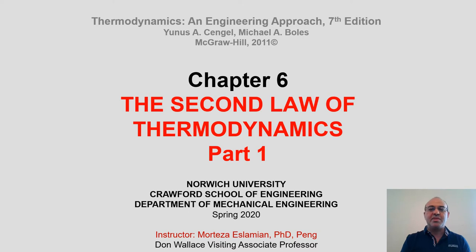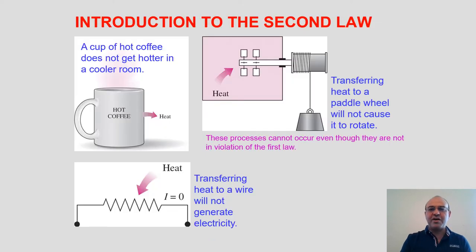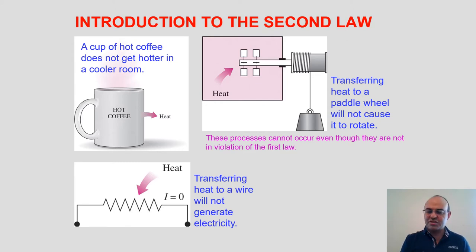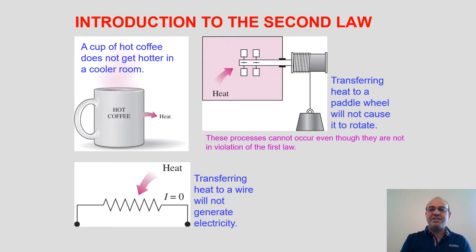We are going to start a new chapter — Chapter 6 — which introduces a new concept: the second law of thermodynamics. So far we have talked about the first law, which is simply the conservation of energy: energy cannot be destroyed or produced, it can only be converted from one kind to another. The second law is different — it talks about the direction of processes.